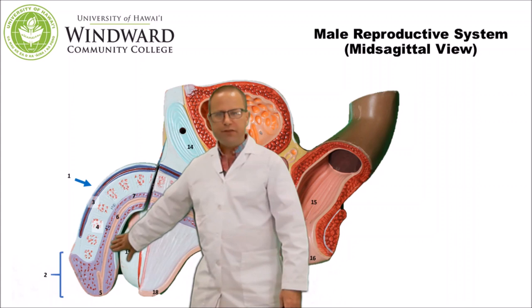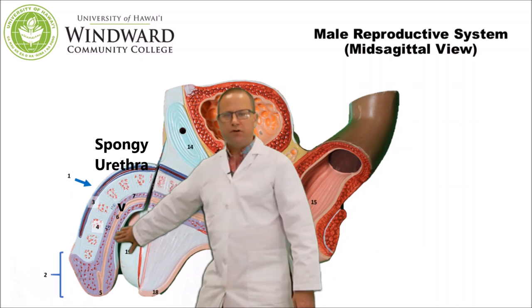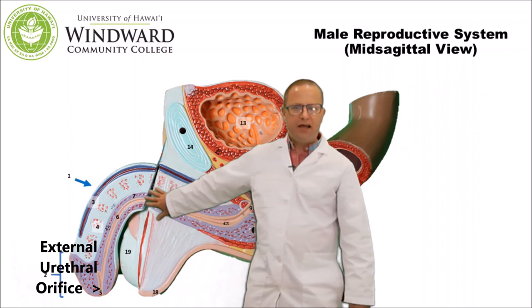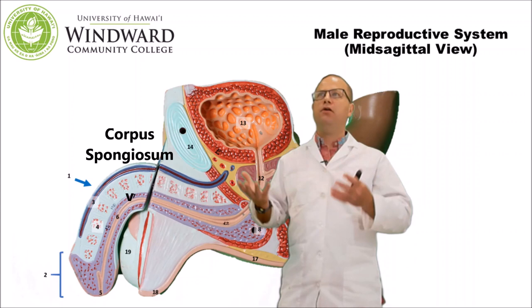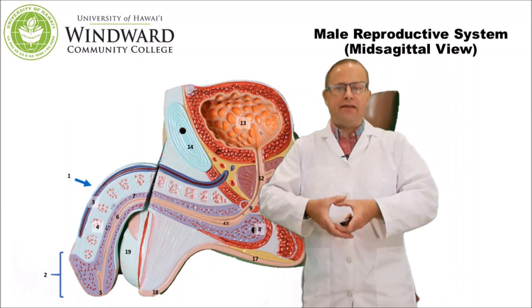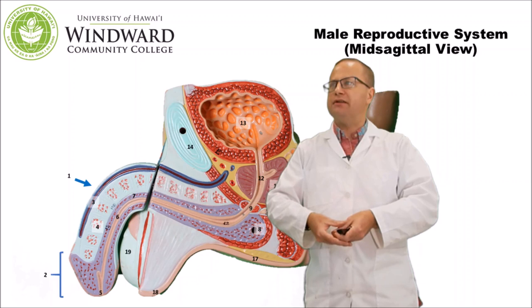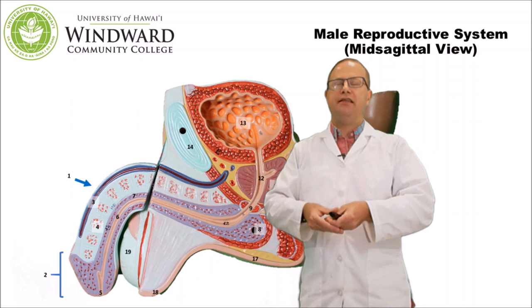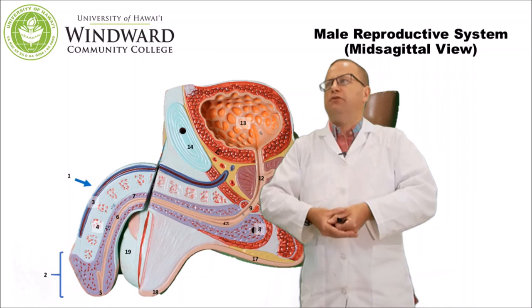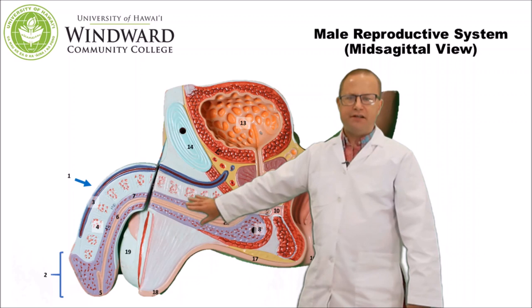Below the corpora cavernosa is the urethra, divided into several parts. The spongy urethra ends in the external urethral orifice and is surrounded by the corpora spongiosum. The corpora spongiosum is also erectile tissue, but its purpose is to hold the urethra open so it doesn't get pinched off by the erection — important since the penis is there to ejaculate semen and sperm during sexual intercourse.